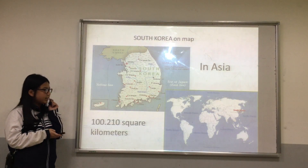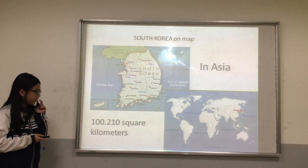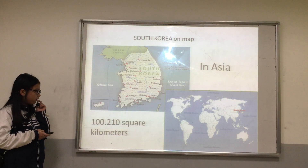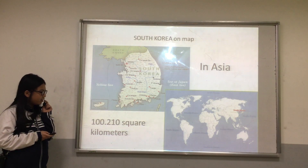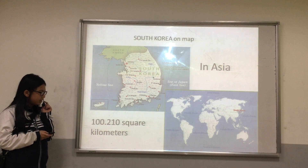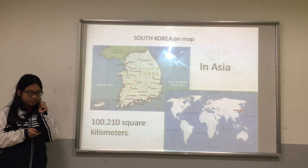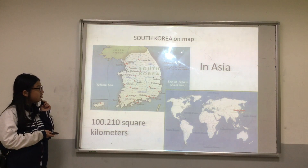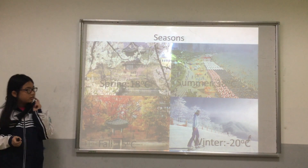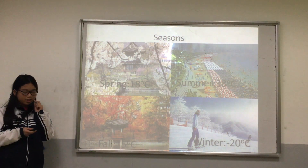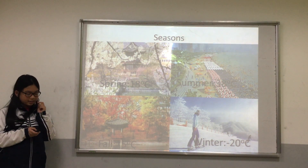South Korea is in Asia and is about 100,210 square kilometers. South Korea has four seasons.